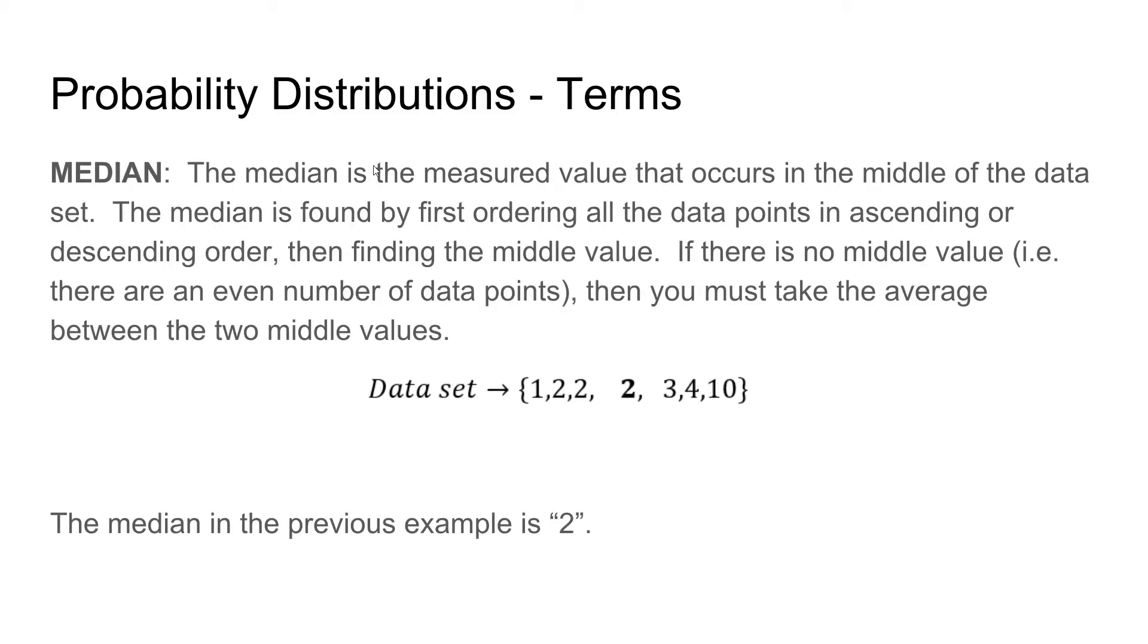The next term is median. The median is the measured value that occurs in the middle of the data set. The median is found by first ordering all the data points in ascending or descending order, then finding the middle value. If there are two middle values when you have an even number of data points, then you must take the average between the two middle values. Luckily for the previous data set, we have an odd number, so we have three values on the left, three values on the right when ordered in ascending order, and the middle term is 2. So our median is 2.